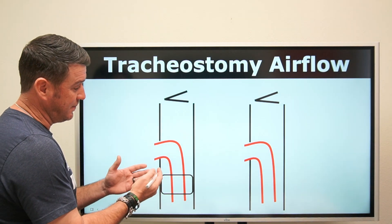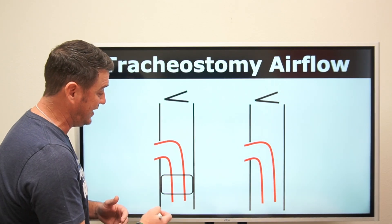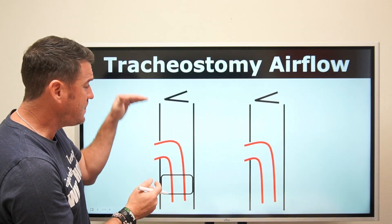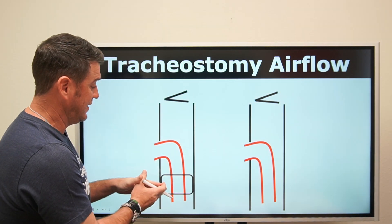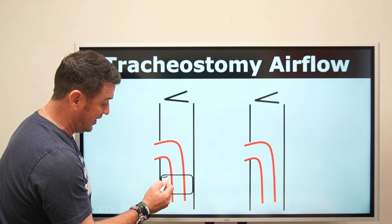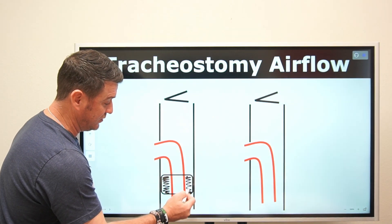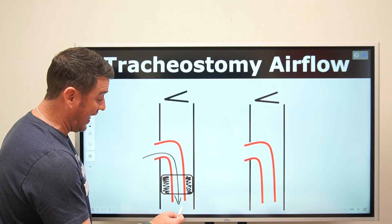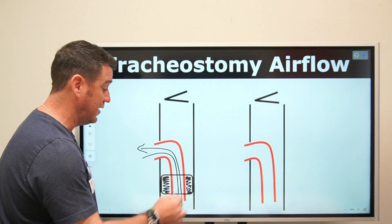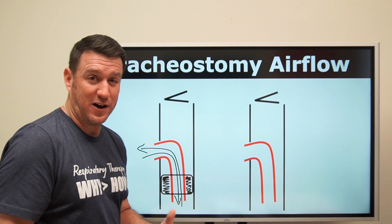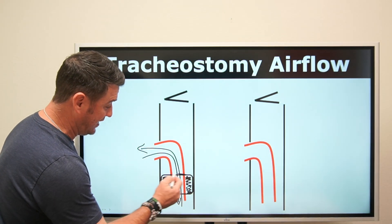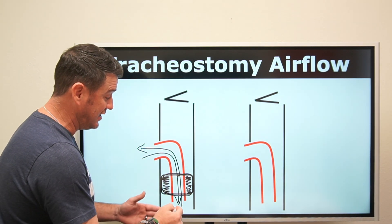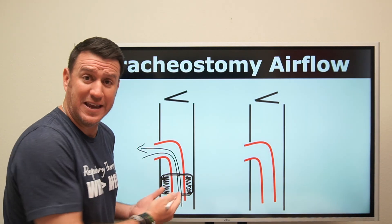This is what a tracheostomy tube looks like as it sits within the trachea. We've got our vocal cords up here at the top, so the artificial airway sits below the vocal cords and the larynx area in the trachea. This tracheostomy tube has an inflated cuff, so all air movement in and out of this patient is going to go in and then back out through the artificial airway. Gas follows the path of least resistance — with a cuff inflated, there's no other place for air to go.